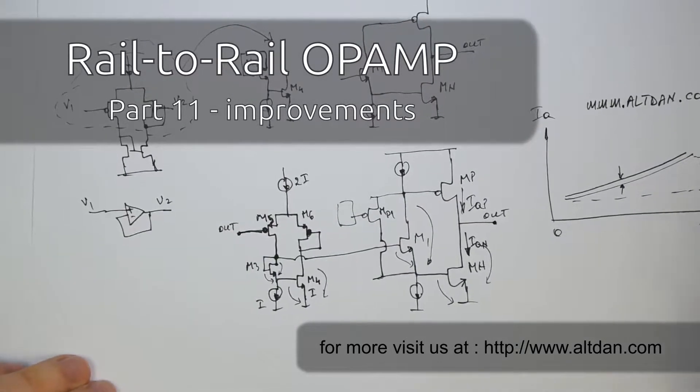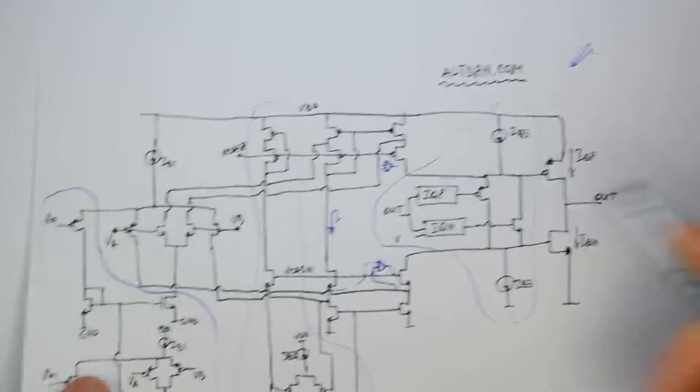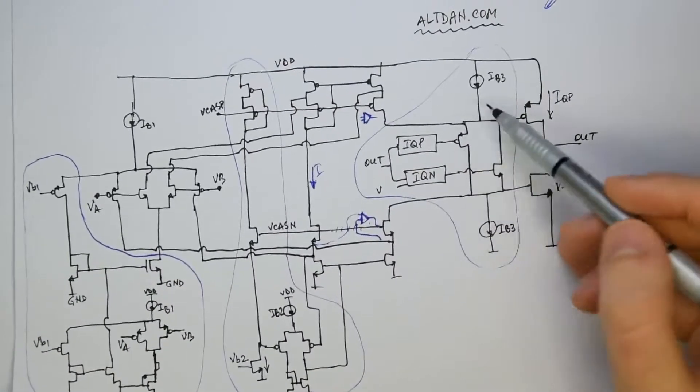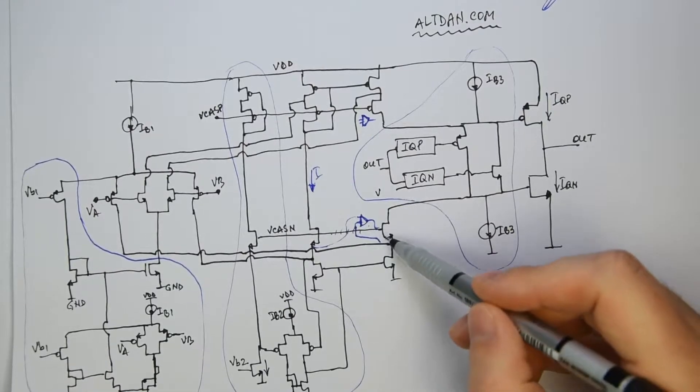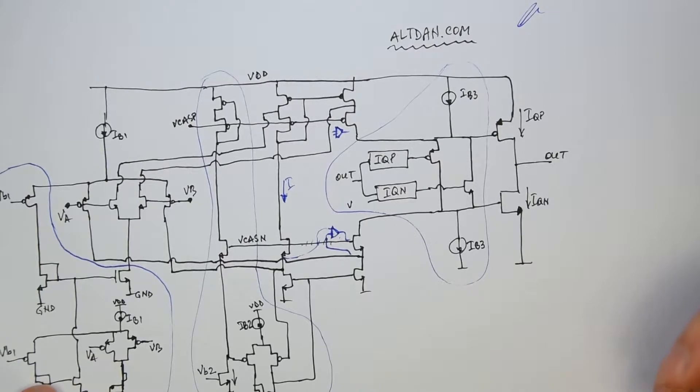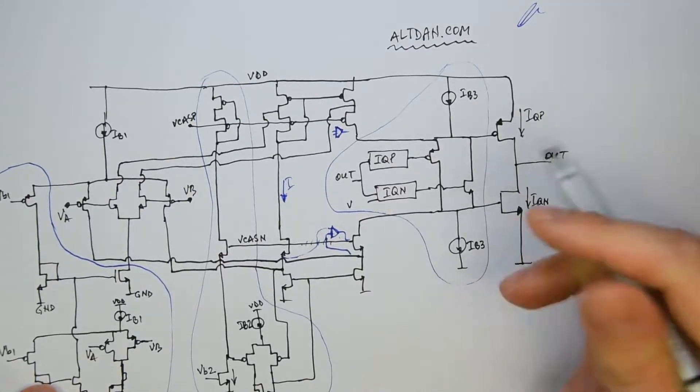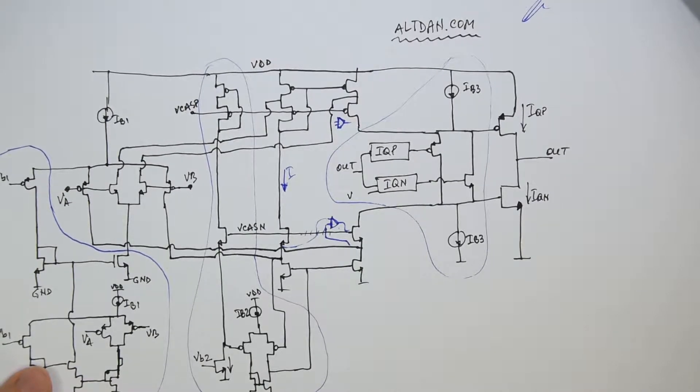Let's come back to the improvements that we can do in the output stage. If you remember, I explained earlier this op-amp, and let's take one by one all the points which we can do in slight improvement at least. Let's start with the output stage since it was the last presented. Probably it's fresher in our minds.